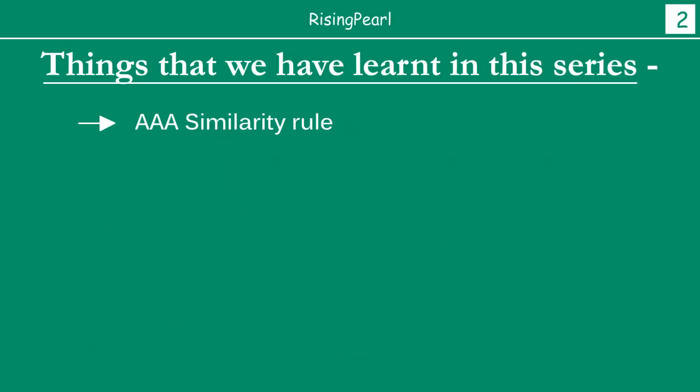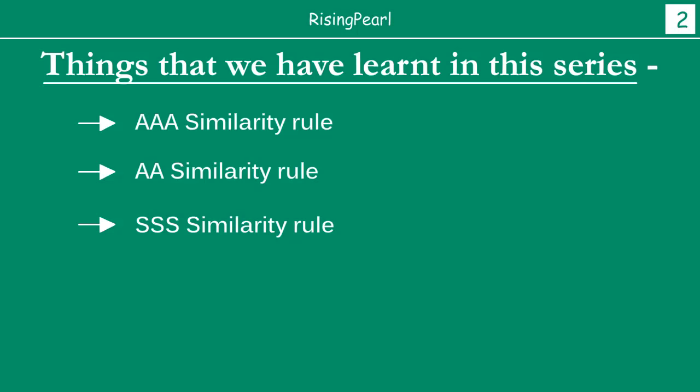Then, we turned our attention to describing the different similarity rules or theorems. The first one was AAA — Angle, Angle, Angle similarity rule. After that, we looked at SSS — Side, Side, Side similarity rule. And finally, the last similarity rule was SAS, which is also called Side, Angle, Side similarity rule.